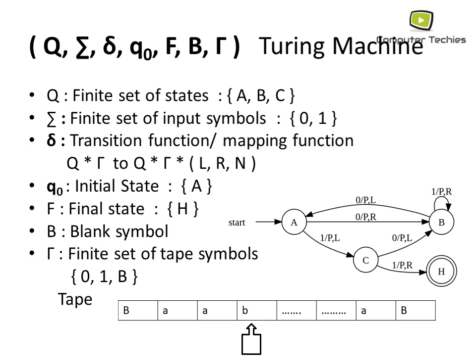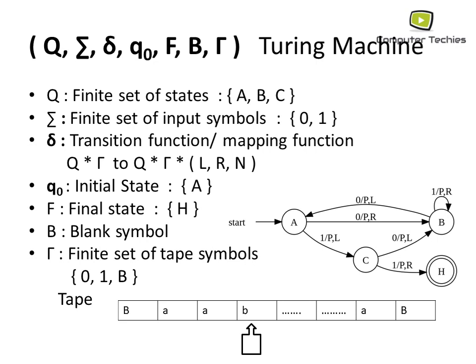According to the diagram, if we are on state A and apply input 0, we get output P and move the pointer to the right of the tape. On state A with input 1, we get output P and move the pointer to the left. This is the seven-tuple Turing machine representation: Q, Σ, δ, Q0, F, B, and τ. Today we revised all machines and their tuple representations: five-tuple for DFA, NFA, and Epsilon-NFA; six-tuple for Moore and Mealy machines; and seven-tuple for the Turing machine. Thanks for watching — if you liked it, hit like and subscribe.